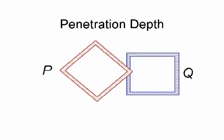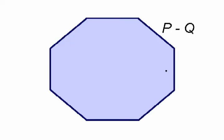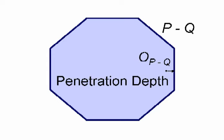We define the penetration depth as the minimum translational distance to separate two objects, P and Q. Equivalently, the penetration depth is defined as the minimum distance from the origin of the Minkowski sum to its surface.